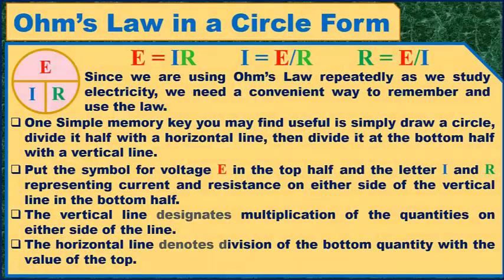Ohm's Law in circle form: since we are using Ohm's Law repeatedly as we study electricity, we need a convenient way to remember and use the law. One simple memory key is to draw a circle, divide it with a horizontal line, then divide the bottom half with a vertical line. The vertical line designates multiplication of the quantities on either side, and the horizontal line denotes division of the bottom quantity into the value of the top.